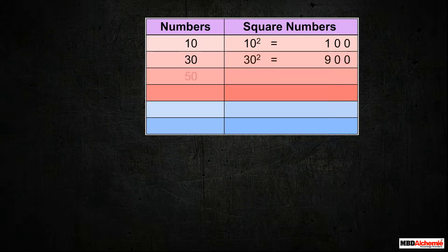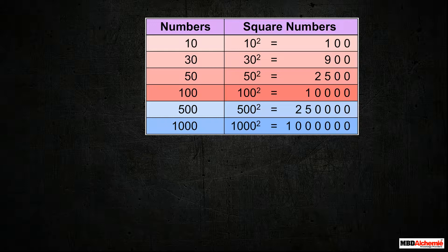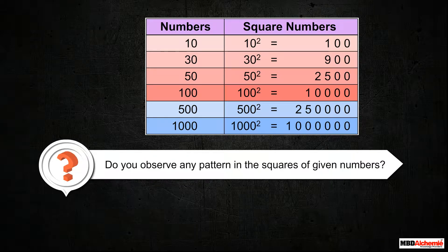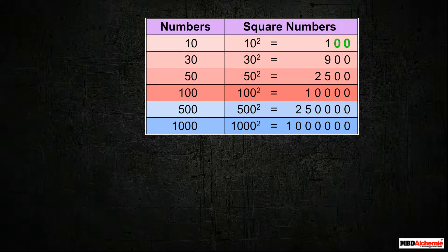Let us see some more numbers whose unit digit is 0. Do you observe any pattern in the squares of given numbers? The number of zeros at the end of the square number is double the number of zeros in the number at the end.